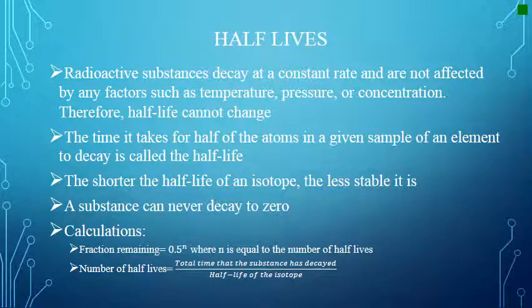Let's take a look at half-lives. Radioactive substances decay at a constant rate and are not affected by any factors such as temperature, pressure, or concentration. Therefore, half-life cannot change. The time it takes for half of the atoms in a given sample of an element to decay is called the half-life. The shorter the half-life of an isotope, the less stable it is. A substance can never decay to zero. Look at these calculations to help you with the following problems.